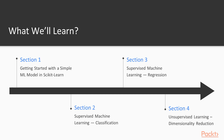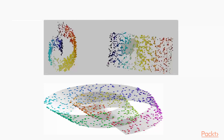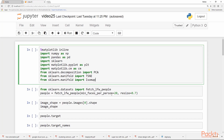Section 4 will be about unsupervised learning and specifically the use of unsupervised learning for dimensionality reduction. Here we will deal with principal component analysis or PCA. We will also cover non-linear methods for feature extraction, specifically T-SNE and isomap, and finally we will apply dimensionality reduction techniques on images.